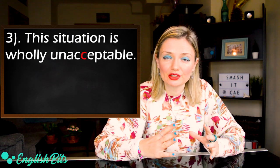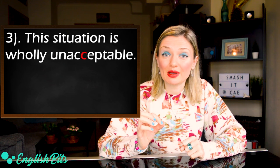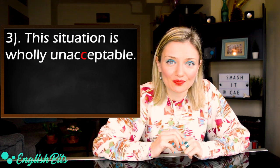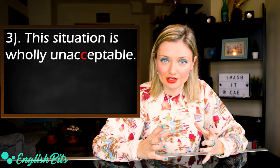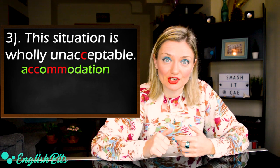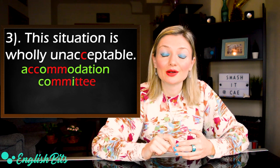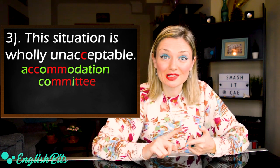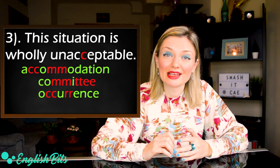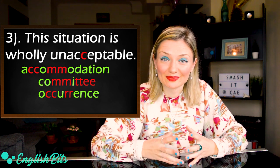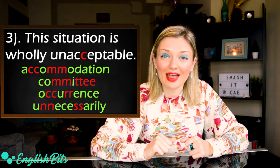Number three: 'This situation is wholly unacceptable.' In this sentence there was a spelling mistake in 'unacceptable' — it's spelled with double c. Let's look at some tricky words with double letters. For example, 'accommodation' has double c and double m. 'Committee' has double m, double t and double e. 'Occurrence' has double c and double r. And 'unnecessarily' has double n and double s.